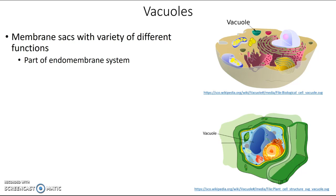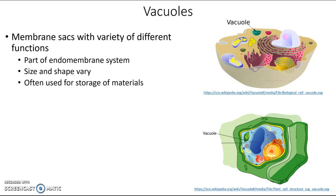Because vacuoles do a bunch of different things, the size and shape of vacuoles is highly variable — they don't all look exactly the same and can be really different in terms of their size and exact shape. One thing they often have in common is that they're frequently used to store materials, though not all vacuoles do that.